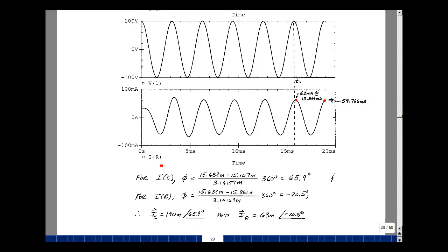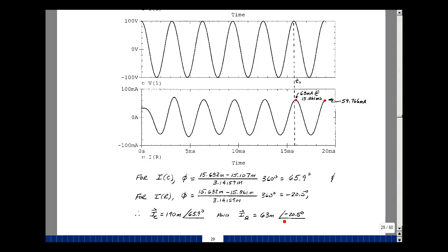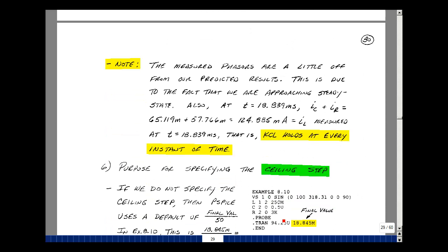Do the same thing for the current in the resistor. You can see here that the waveform has shifted to the right, so it's a negative phase angle. Peak here is 63 milliamps, and the time was 15.861 milliseconds. Once again, mark this point at the end of the simulation, it's about 59.766 milliamps. T0 minus T1 over T times 360, I get a minus 20.5 degrees. So magnitude was 63 milliamps, angle minus 20.5. We calculated this to be 63.25 milliamps at an angle of minus 18.435. So again, pretty close. There's a comment here about the fact that if we ran a few more cycles, we would have closer and closer to the values we hand calculated.